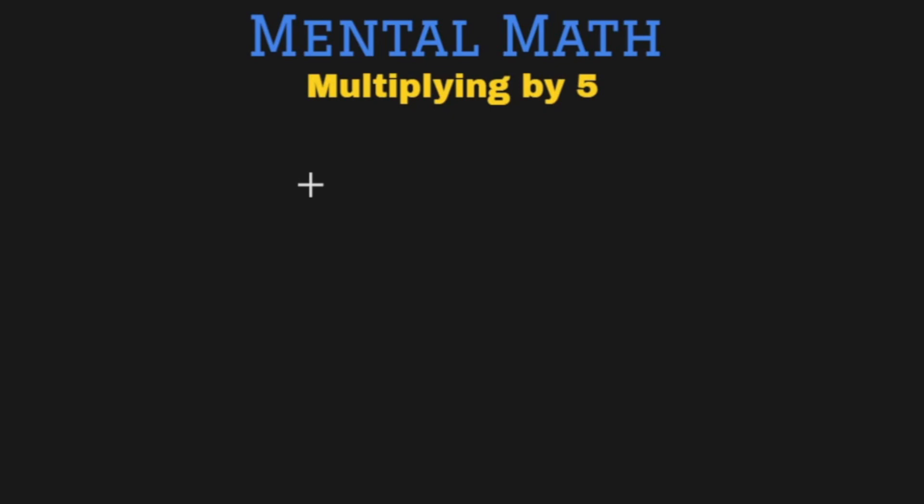For example we have a number 28 and we want to multiply it by 5. So how can we do it?